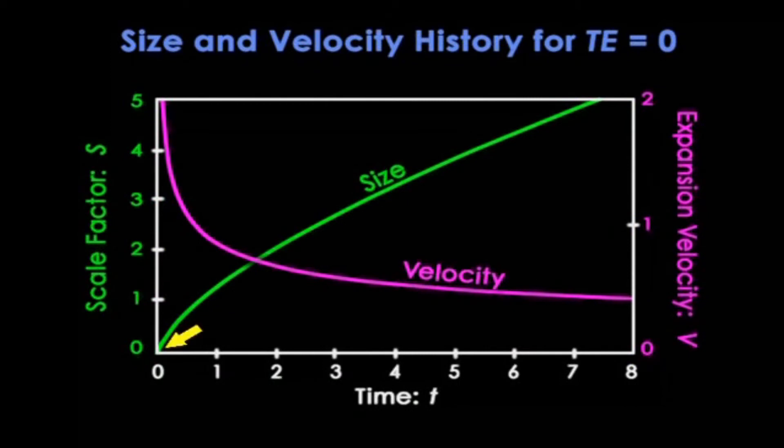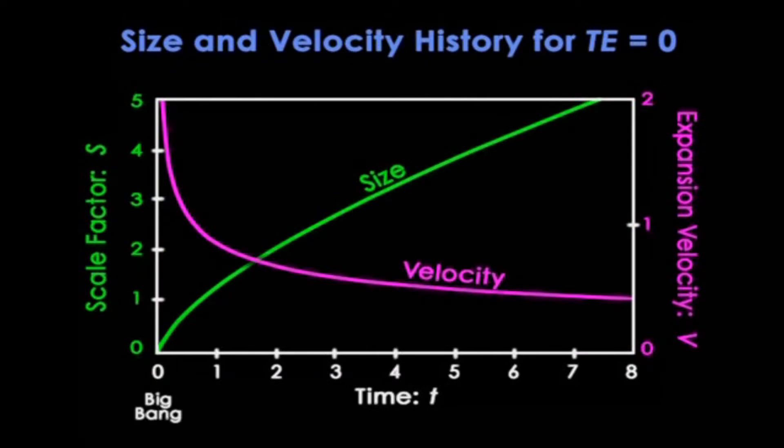Notice that our analysis shows the size going to zero with an initially infinite expansion speed. That, of course, is the Big Bang. Whatever launched the Big Bang needed to provide an enormous expansion speed to liberate everything from an incredibly compact and tightly bound region. Now we'll return to this extraordinary launching situation in lectures 30 and 31 when we look at inflation's amazing launching mechanism for the expansion.